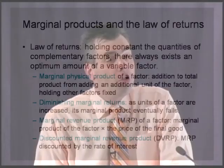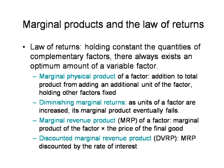The marginal revenue product of a factor of production is like the marginal physical product but expressed in monetary terms rather than in units of physical goods. As McDonald's adds additional workers, it can produce additional hamburgers, sells those hamburgers in the consumer goods market, and receives money. So the marginal revenue product of a factor is how many more dollars of revenue do I get from employing one more unit of this factor.